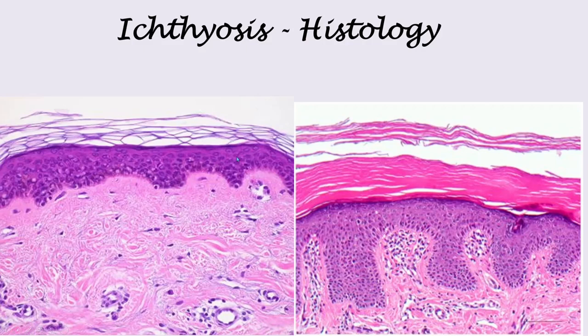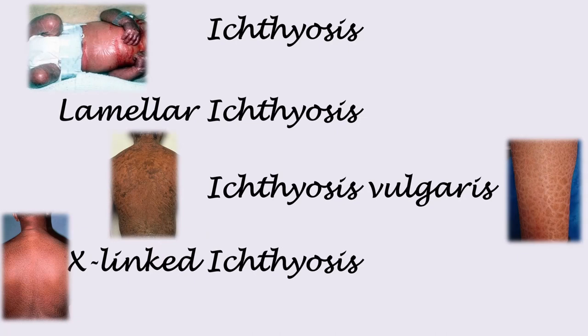There are different types of ichthyosis, such as lamellar ichthyosis, X-linked ichthyosis, and our primary focus, ichthyosis vulgaris. All of them are caused by genetics and can be inherited to other generations.